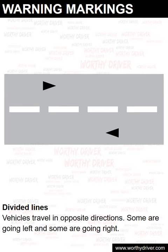Divided lines. This marking shows vehicles travel in opposite directions — some are going left and some are going right.